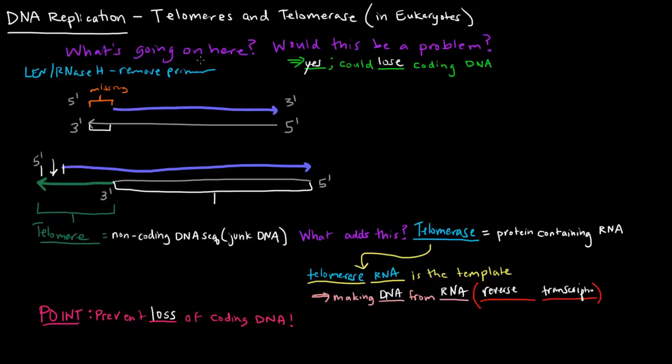So telomeres basically help us prevent the loss of important coding DNA. Telomeres are very important. The length of these telomeres is related to aging. I'm not exactly sure how. But I hope that video overall was helpful in understanding a little bit more about telomeres and telomerase.